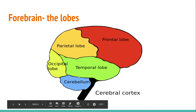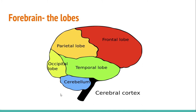Auditory stimuli basically means understanding what you're hearing. And the temporal lobe, again, handles memory and speech — meaning long-term memory and how to say things.